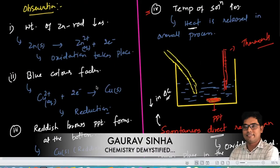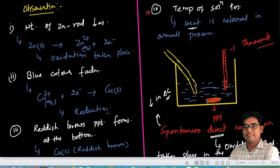Third observation what we made is that here we have some reddish brown precipitate forms. Why does reddish brown precipitate form?